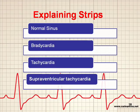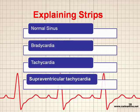Now that we've learned about the basics of heart rhythm and heart rate, I'm going to explain what to look for when we look at the following EKG strips: normal sinus rhythm, bradycardia, and tachycardia. When we talk about these, we're usually talking about the ventricular rate. There's also supraventricular tachycardia — the rate and rhythm happening in the atria.